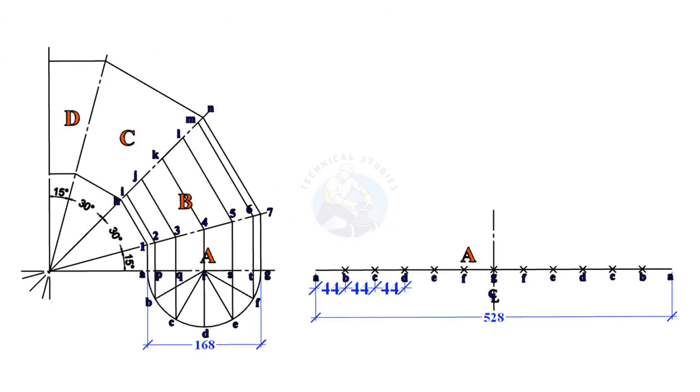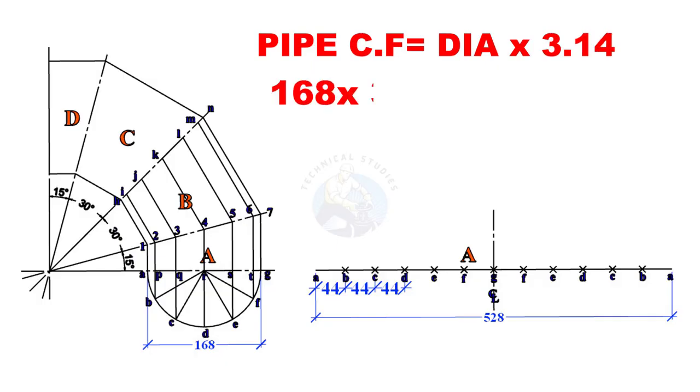Calculate the circumference of the pipe. Pipe circumference is equal to pipe diameter multiplied by 3.142, is equal to nearly 528 millimeters.